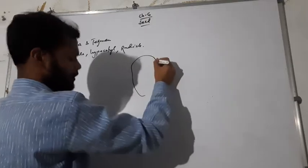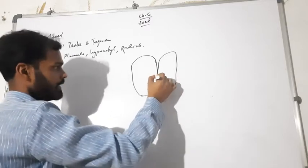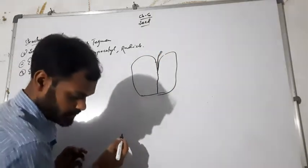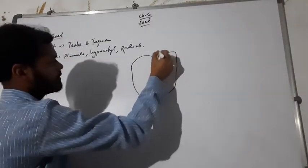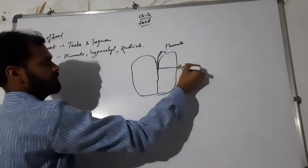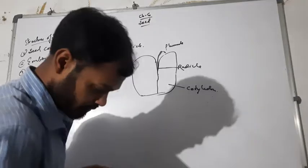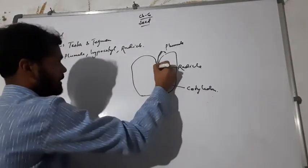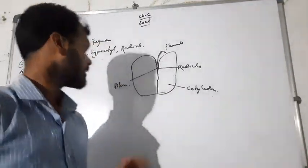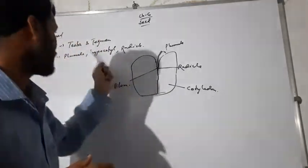For example, if this is your seed, you will see here the plumule, the radicle, and the cotyledon. This part is also known as the hilum. So these are the parts of the seed structure.